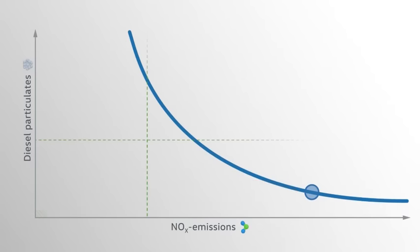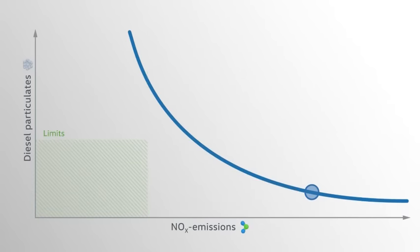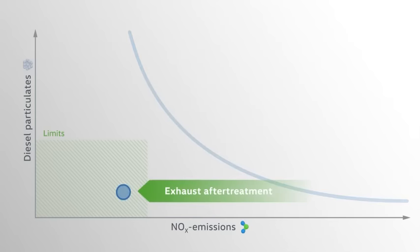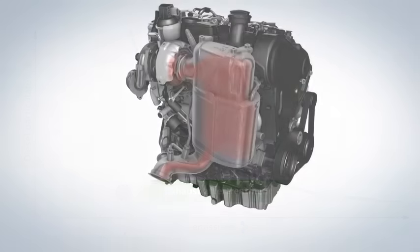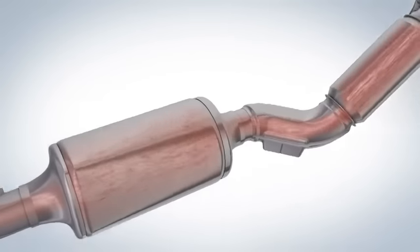Therefore, to comply with stricter NOx limits such as Tier 2, BIN 5 in North America, exhaust gas recirculation alone is insufficient to limit the NOx. The NOx have to be reduced actively. There are two technologies for this exhaust gas after treatment.